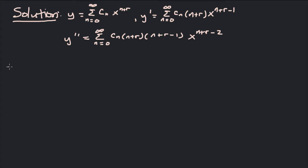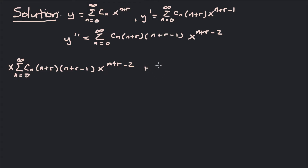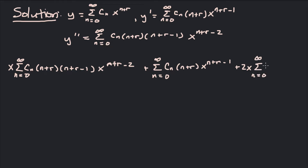Now we substitute into the differential equation. The x·y'' term gives x times the series: sum from 0 to infinity of cₙ(n+r)(n+r−1) x^(n+r−2). The y' term gives the series: sum from 0 to infinity of cₙ(n+r) x^(n+r−1). And the 2x·y term gives 2 times the series: sum from 0 to infinity of cₙ x^(n+r). The whole equation equals 0.